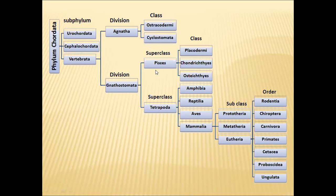In Gnathostomata, two superclasses are present: Pisces and Tetrapoda. In Pisces, different classes of fishes are placed, including Placodermi, Chondrichthyes, and Osteichthyes. Earlier, Placodermi was the single class for extinct jawed fishes, but now it has been split into two classes: Placodermi and Acanthodii. In today's class we will be confined to the Placodermi class — how these fishes originated and what their salient features are.